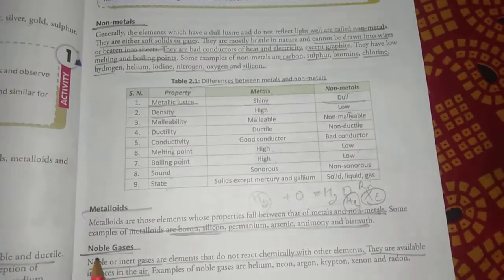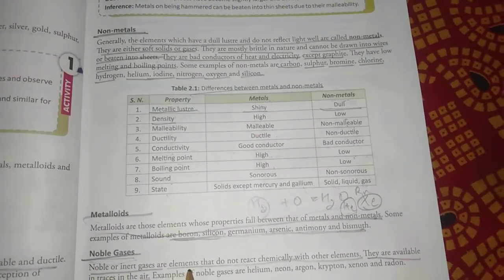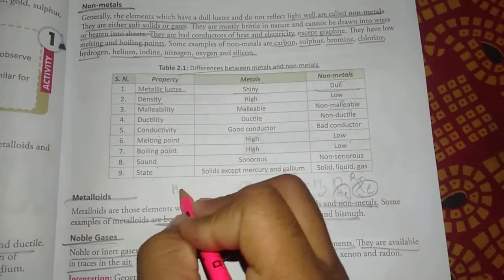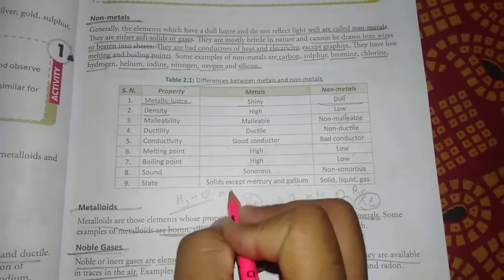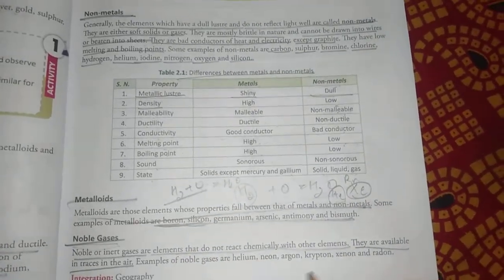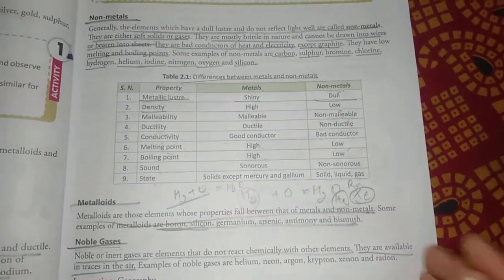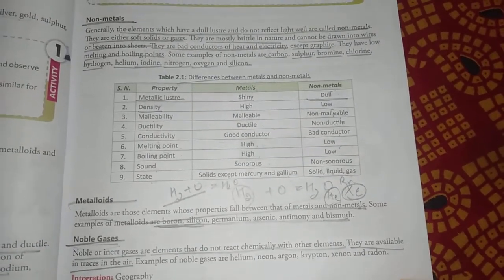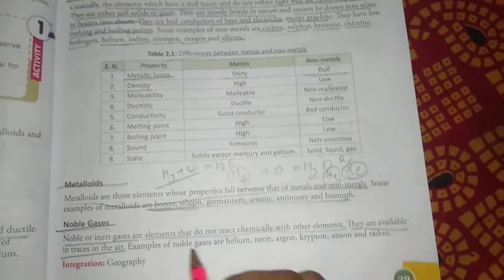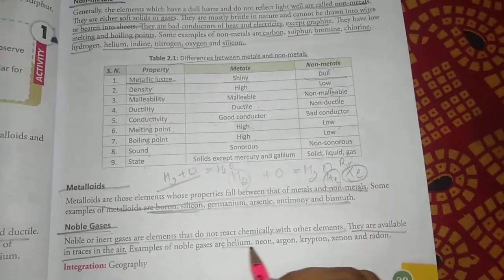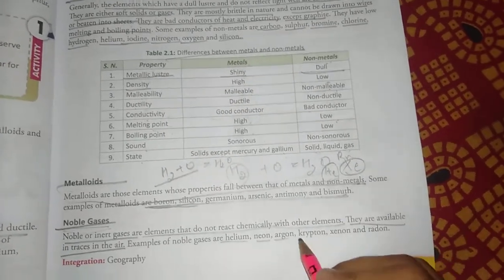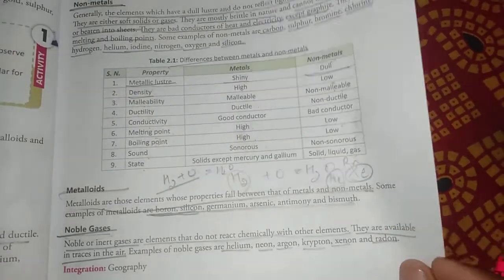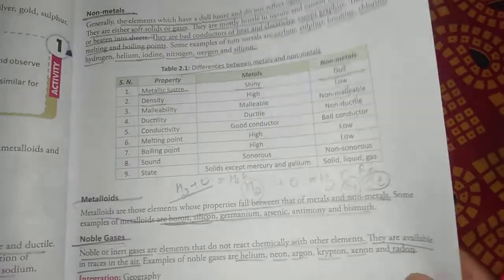Now we have noble gases. Noble gases do not react with any other elements. If hydrogen reacts with oxygen to form water, noble gases will not react with anything. Examples include helium, neon, argon, krypton, xenon, and radon.